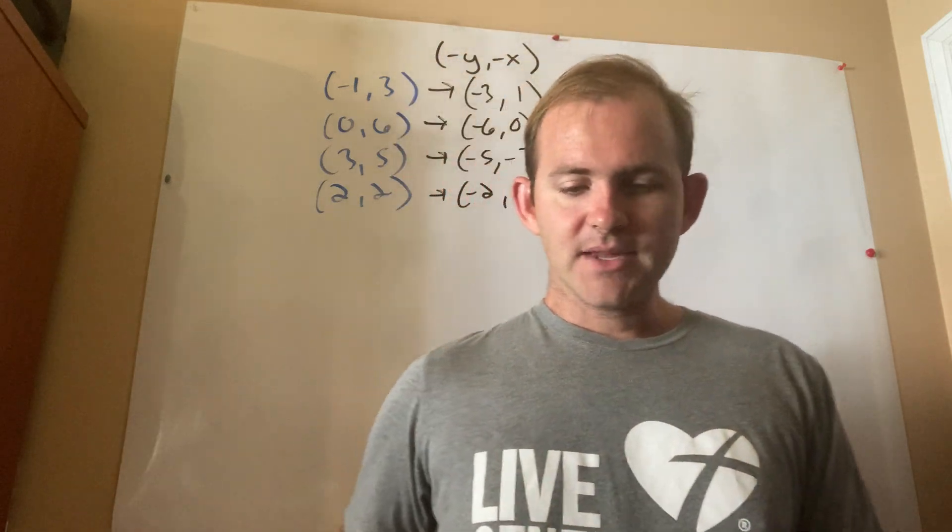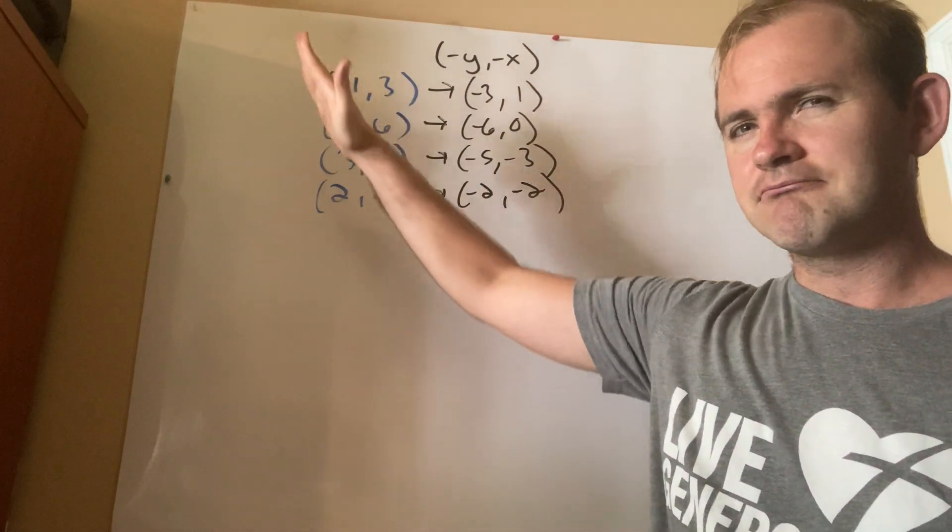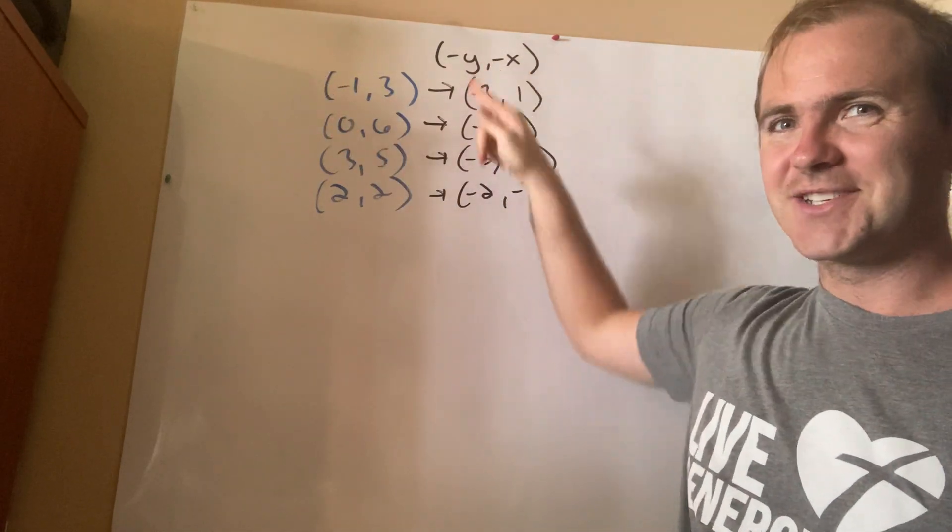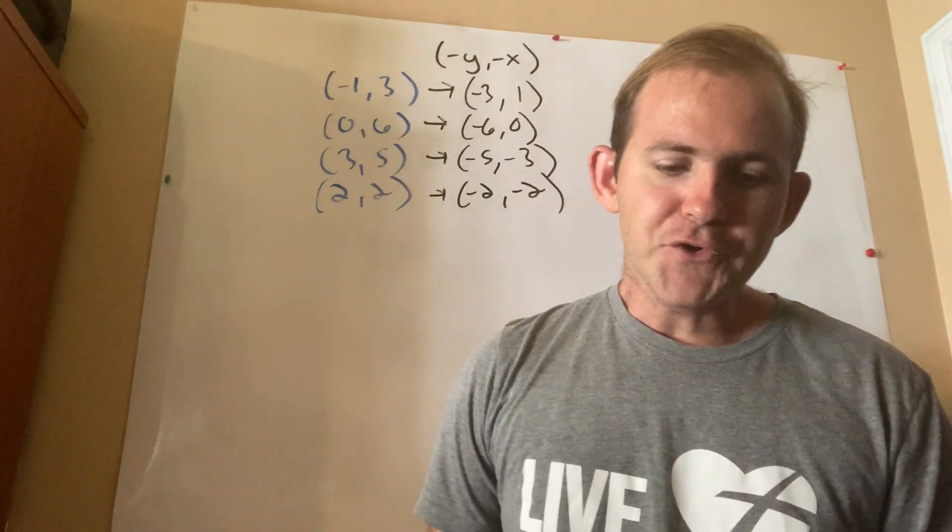Example 14. Do you notice how the line of reflection seems to go diagonally this way? Hmm, which one do we just learn about? y equals negative x would be my line of reflection.